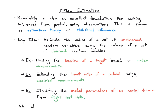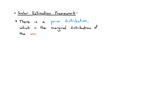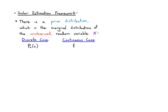We're going to start with the scalar case in this video to build intuition — just one variable we want and one we observe. Formally, we'll have a framework with all the ingredients we need. There's going to be a prior distribution: the marginal distribution of the unobserved random variable. In the discrete case we'll have a PMF p(x); in the continuous case, a PDF f(x).